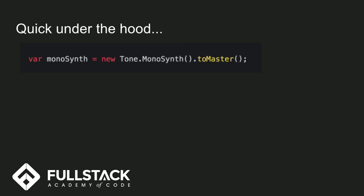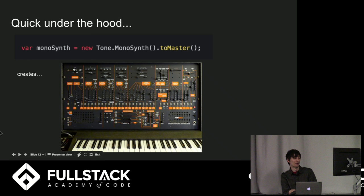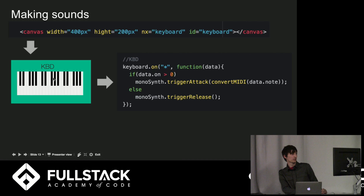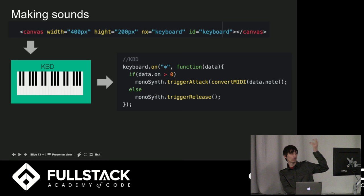Going back under the hood to the history I was showing you earlier — this is how you would make a monosynthesizer. Just one line of code, and that makes this, which is pretty insane. As for making sounds: this is just an example of the Nexus UI. It's basically a canvas — you give it a width and the type, and then this creates a little widget. You set up an event listener and say whenever I press the key, I want it to make some noise.